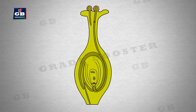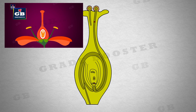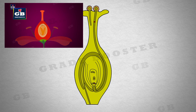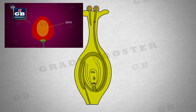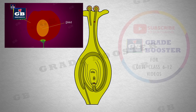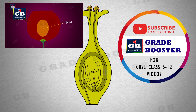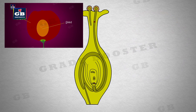After fertilization, the zygote divides several times to form an embryo within the ovule. The ovule develops a tough coat and is gradually converted into a seed. The ovary grows rapidly and ripens to form a fruit. Meanwhile, the petals, sepals, stamens, style and stigma may shrivel and fall off.